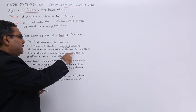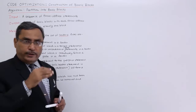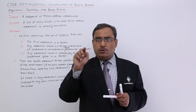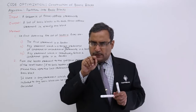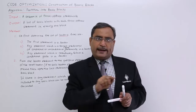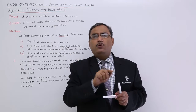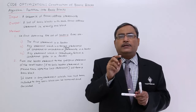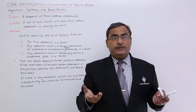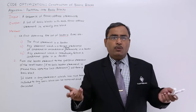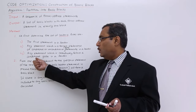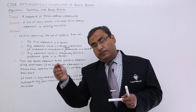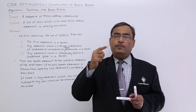Any statement which immediately follows a conditional goto is also a leader. For example, if flag equals 0 then goto line number 3 — the next line just after this if statement will be another leader. This applies specifically to conditional goto because with an unconditional goto, the next statement would be unreachable, so it cannot be made a leader. The statement which is the target of the conditional or unconditional goto will also be a leader.